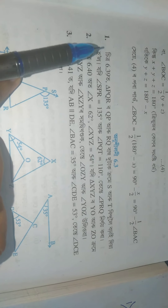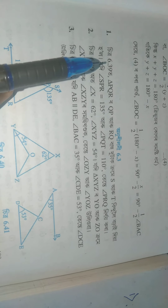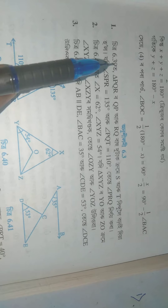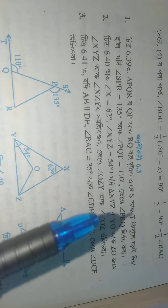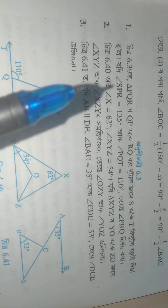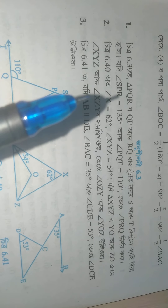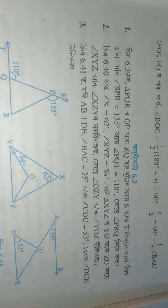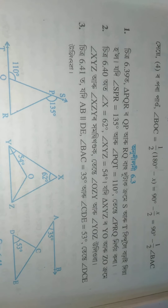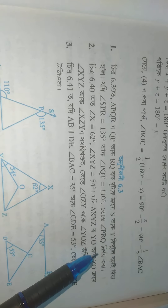I am getting the School of 6.3, but I want to see my work. PSPR is equal to 135, QTR is equal to 110, and QPQR is equal to 9. So I will say,